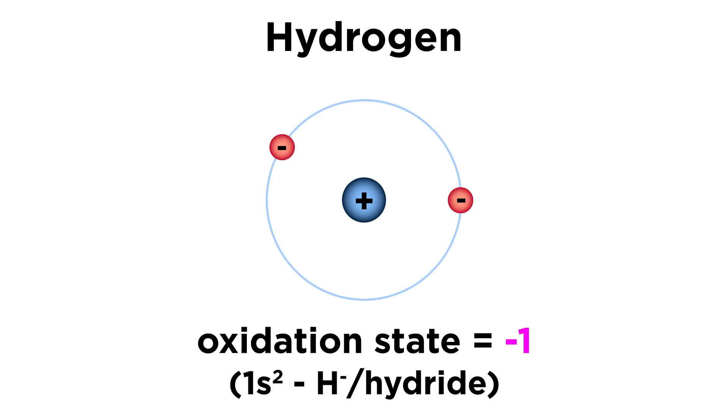The second would be minus one, resulting in H minus, or a hydride ion, which has an electron configuration of 1s2, or two electrons in the 1s orbital. This means a full outermost shell, since the first energy level includes only this single s orbital.